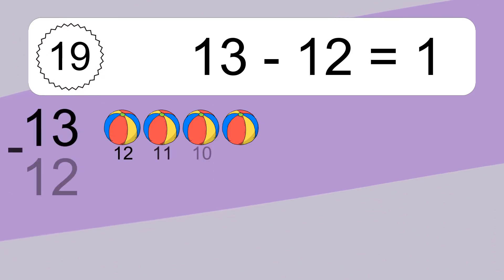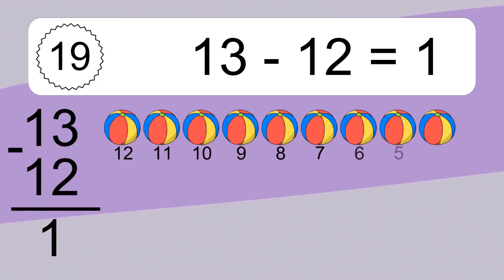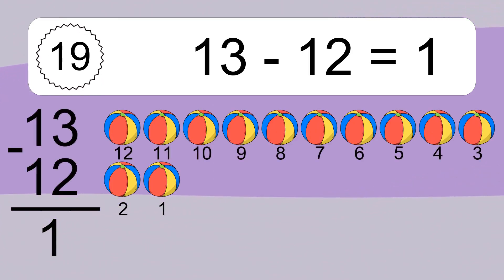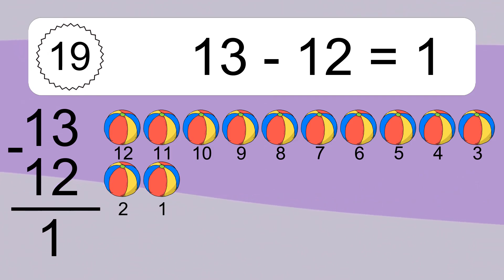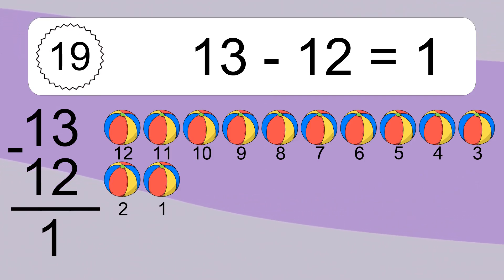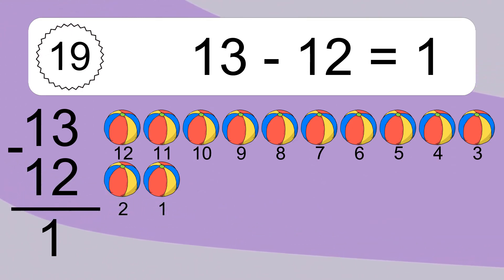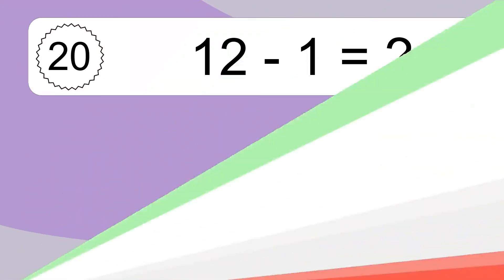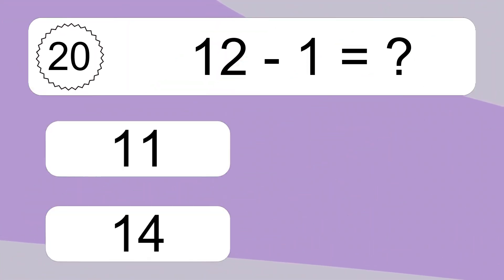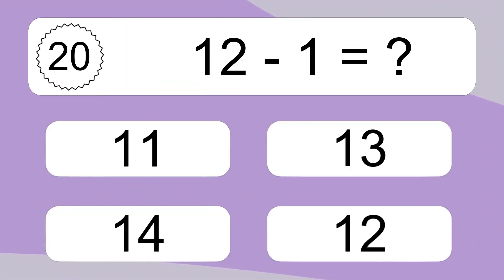13 minus 12 equals what? 13 minus 12 equals 1. Let's count it! 12, 11, 10, 9, 8, 7, 6, 5, 4, 3, 2, 1.